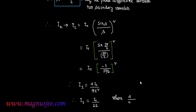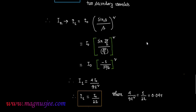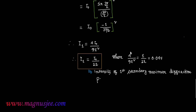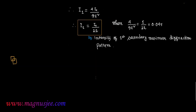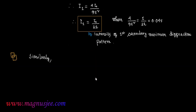Therefore I1 = 4I0 / (9π²). Now, 4/(9π²) = 0.045 = 1/22. So we get I1 = I0/22, which is the intensity of the first secondary maximum diffraction pattern.